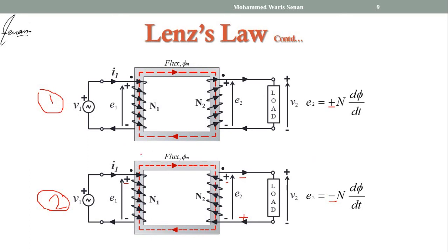So before saying that the induced EMF will have a positive or negative sign, you just have to notice the direction of the coil wrapped over the limb of the transformer. You can apply the same concept to the primary induced EMF E1 as well, to determine whether it will have a +N dφ/dt or -N dφ/dt sign. This is all for today — thanks for watching.